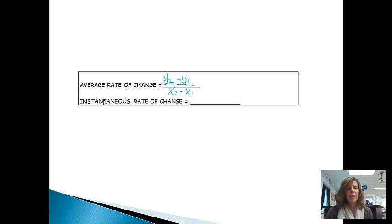And an instantaneous rate of change, we're looking for at that specific point in time what's happening. So we're looking for right at that spot. So we're looking for the tangent line, the slope of that tangent line there. So when I ask you for an instantaneous rate of change, I'm actually asking you for derivative.